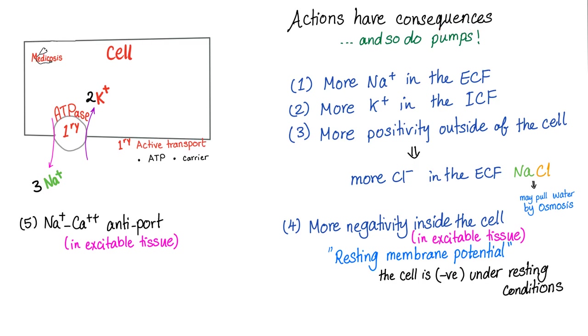Actions have consequences and so do pumps. The sodium-potassium pump have many consequences. First of all, you have more sodium in the ECF. It's thanks to the sodium-potassium pump. Second, you have more potassium in the ICF. Got it. You have more positivity outside than on the inside. Why is this? Because you're pumping three positive to the outside and two positive to the inside. You're pumping more positive to the outside than to the inside. And that's why the outer surface is more positive relative to the inside. And the inside is more negative relative to the outside. And that's why the resting membrane potential is negatively charged. It's thanks to your sodium-potassium pump.